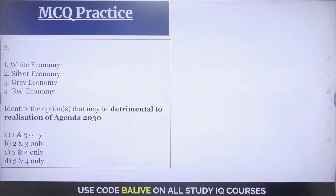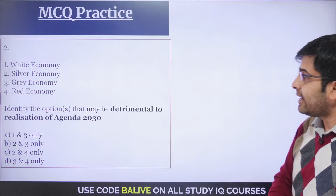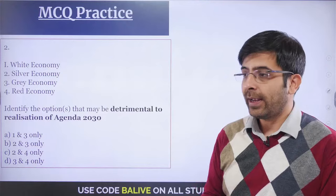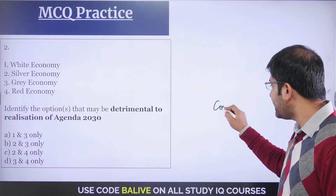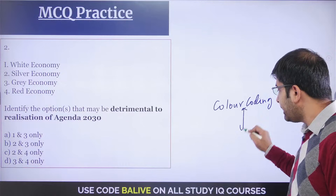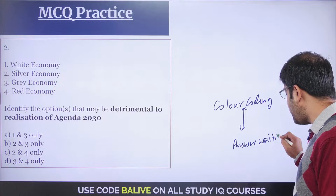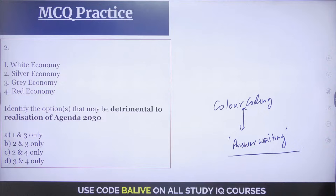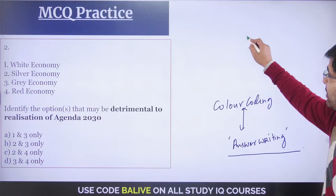Answer this question: among white economy, silver economy, gray economy, and red economy — identify the options that may be detrimental to the realization of Agenda 2030. Always look to use the color coding we just learned in your answer writing, as it shows specific knowledge and makes your answers richer.